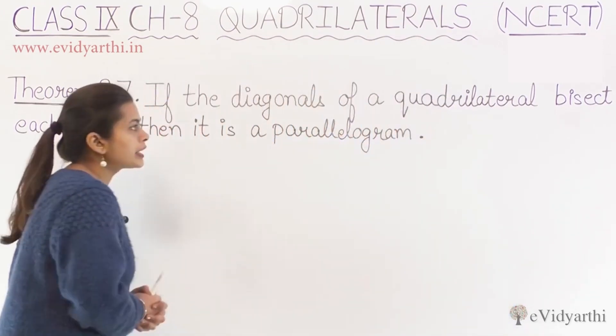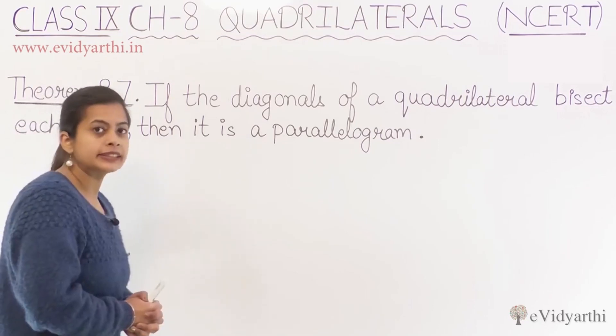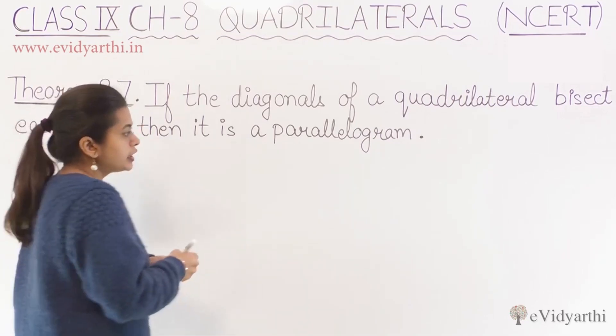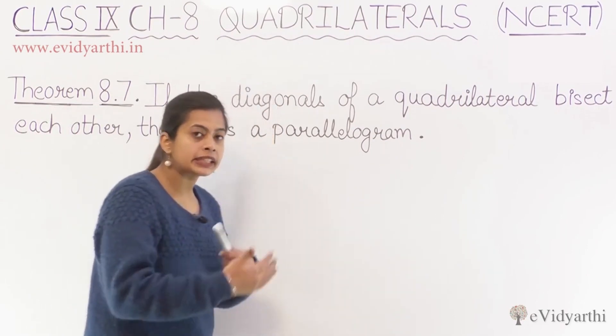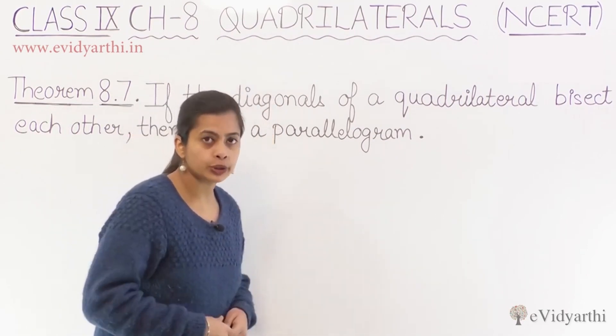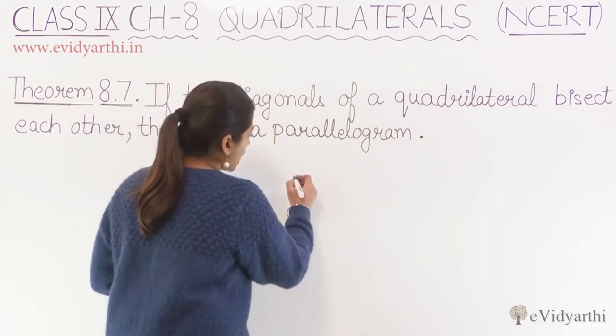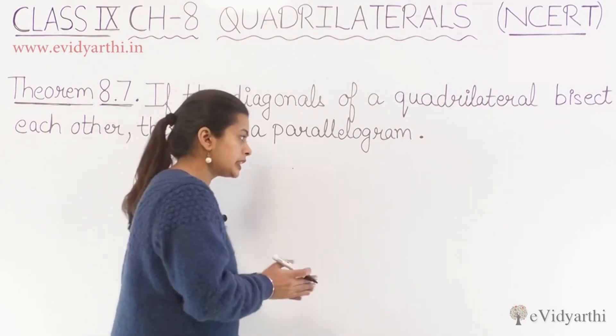If the diagonals of a quadrilateral bisect each other, then it is going to be a parallelogram. So you clearly know how in our 8.6 theorem, we were working with parallelograms in quadrilaterals, and we said that the diagonals will bisect each other every time.